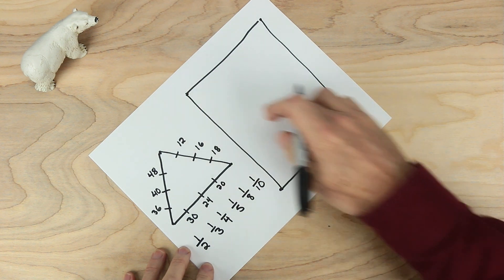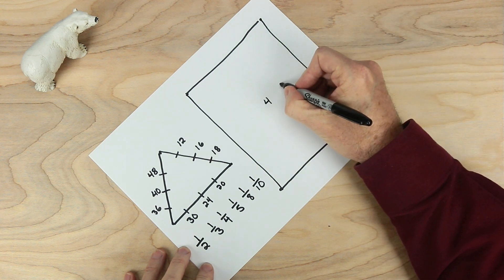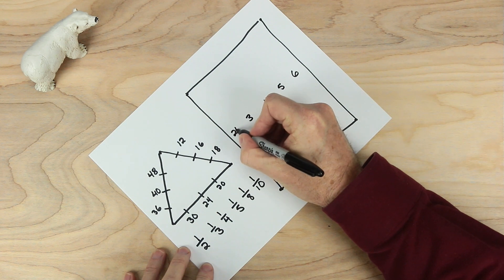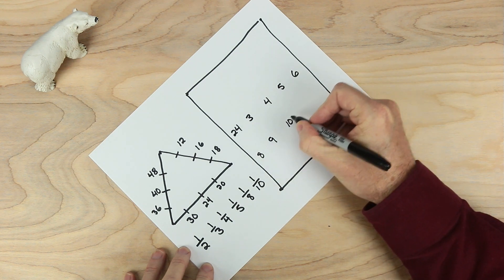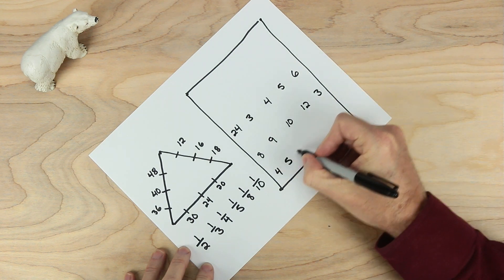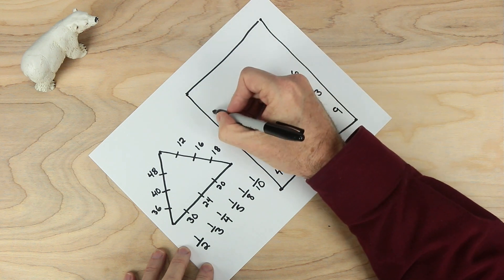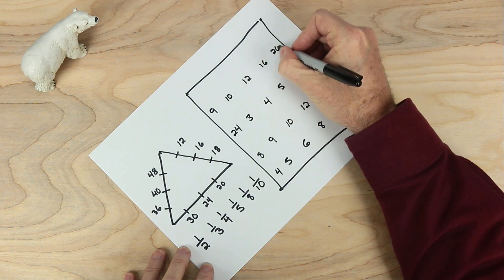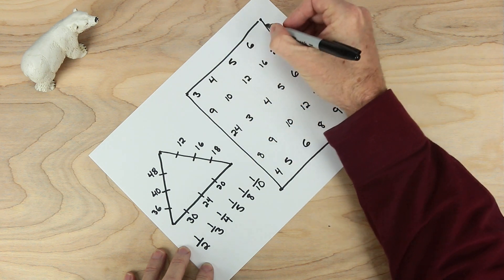Still more numbers. Let's find the middle of this rectangle and put the number four, and put these numbers in this order — it will help the game. Four, five, and six. And over here we need to have three and 24. About down here, let's go ahead and put eight, nine, ten, twelve, and three. And on the bottom row: four, five, six, eight, and nine. And across here: nine, ten, twelve, sixteen, and twenty. And on the top row: three, four, five, six, and eight.